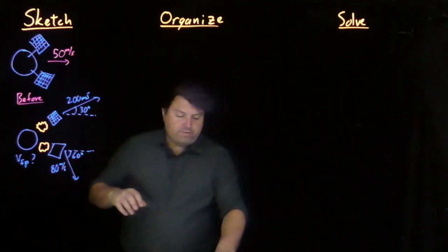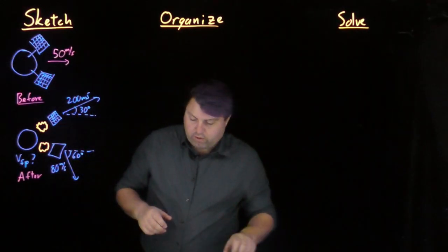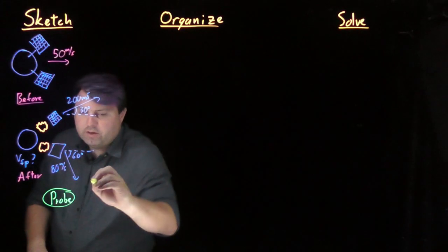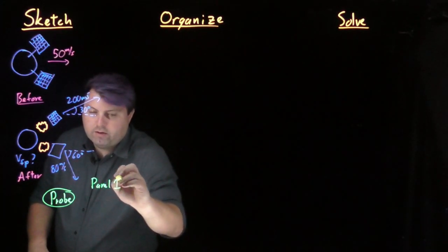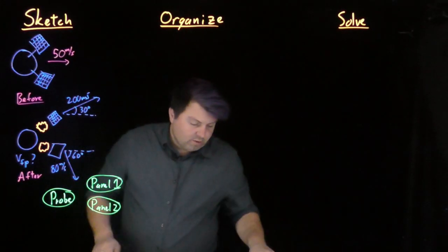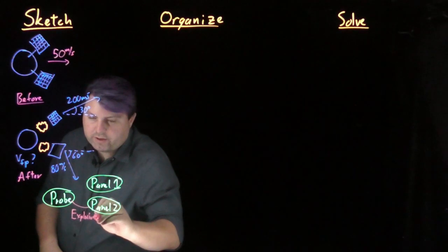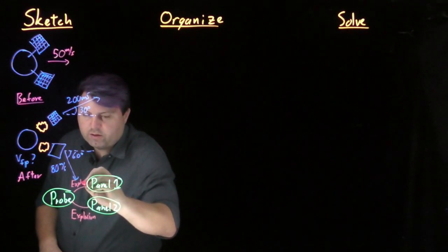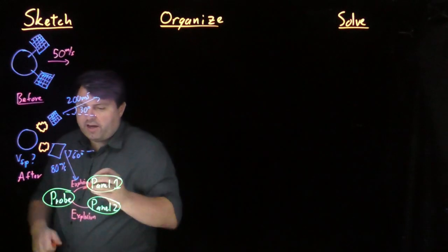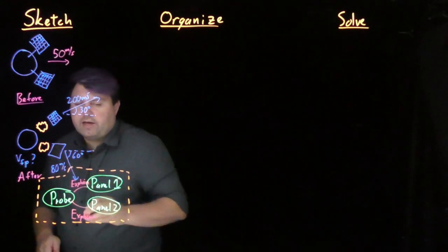In our sketch we've done it before — this is an after — and we can add one more where we look at the interaction diagram. So we have our probe, we have panel one, and we have panel two. What's linking these together is some sort of explosion force during this explosion. So if we want to conserve momentum, we have to consider the entirety of this as a single system.